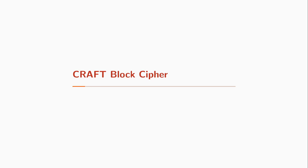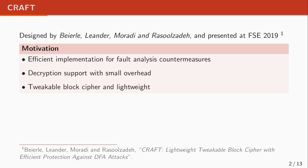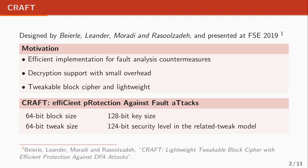First I will talk about the CRAFT block cipher itself, how it is designed and how it works. The cipher was designed by our group in Bochum and was presented at FSE 2019. The main motivation and goal to design this new cipher was to present a cipher which is efficient while implemented together with fault detection or fault correction countermeasures. However, there were other secondary goals: we wanted the cipher to support decryption on top of encryption with a small overhead, also we wanted it to be a tweakable block cipher and be as lightweight as possible. We came up with the CRAFT block cipher, whose name is crafted from the phrase 'Efficient Protection Against Fault Attacks'.